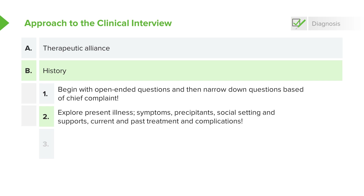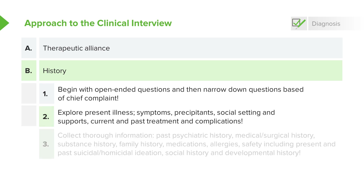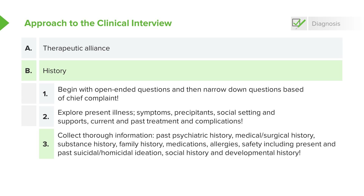Be curious about their current and past treatment options and any complications they've had. Collect thorough information — this is a psychiatric assessment, but it's extremely important that you ask not only about psychiatric history, but also medical and surgical history, substance abuse history, family history, medications the patient is taking, their allergies, and safety, including not only their present safety but past suicidal and homicidal thoughts. Also consider their social history and developmental history.